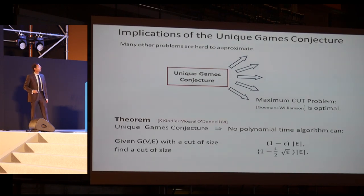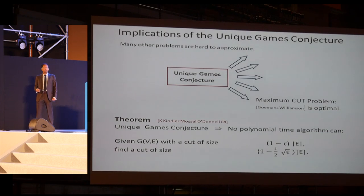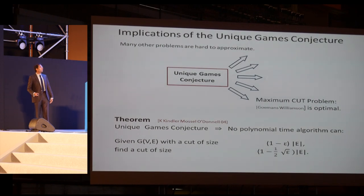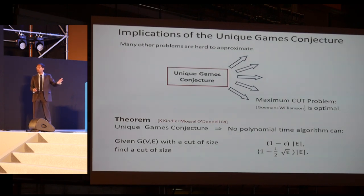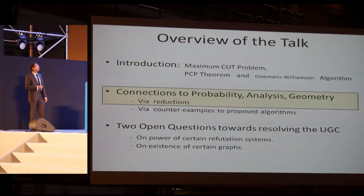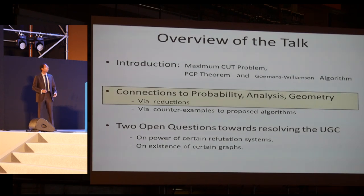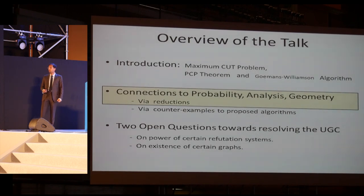Here is a formal statement: the unique games conjecture implies that no polynomial time algorithm, given a graph with a cut of size 1 minus epsilon, can produce a cut of size 1 minus one-half times square root epsilon — anything better than 1 minus square root of epsilon. Such a statement is proved by reductions, a standard tool in computational complexity. These connections to probability, analysis, and geometry come into play in why these reductions work.